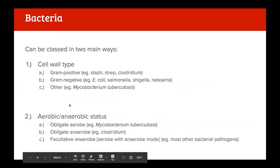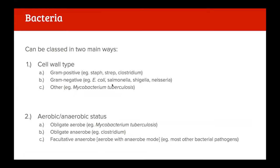Now let's look at bacteria - this is probably the chunkiest section of today. They can be classed in a few different ways: cell wall type and aerobic/anaerobic status. They can also be classed by shape but I don't think that's as clinically important because it doesn't really tell us how to kill them. Cell wall type can help us kill them. So there are gram positives and gram negatives.